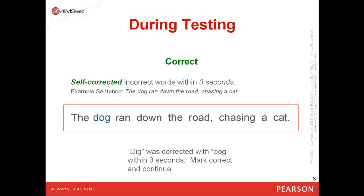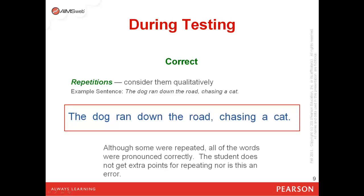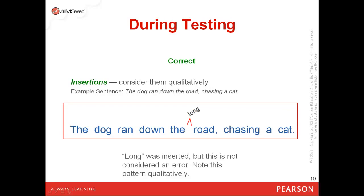For example, if the student said 'the dig, the dog ran down the road chasing a cat,' you would mark the word dog correct, even if previously you had marked it incorrect. In situations where repetitions occur, such as the student says 'the dog, the dog, the dog ran down the road chasing a cat,' you would still leave the dog marked as correct. If you notice students doing this frequently, this is a great opportunity to jot down a qualitative note about that student's reading for later instructional relevance. If the student inserts a word, such as 'the dog ran down the long road chasing a cat,' long is inserted but it's not considered an error. When students do this frequently, this may be a pattern you wish to note for qualitative purposes and instructional relevance.